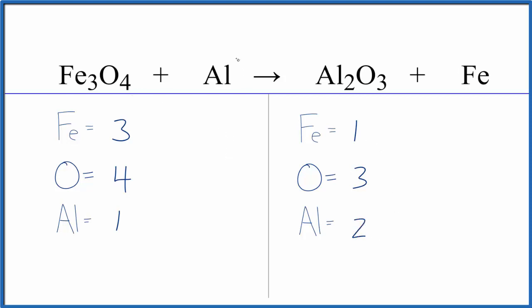When we're doing an equation like this, the aluminum's by itself and the iron's by itself, so when we get to the end it's really easy just to put a coefficient in front of these and then balance the aluminum or the iron. So we're going to leave these until last.